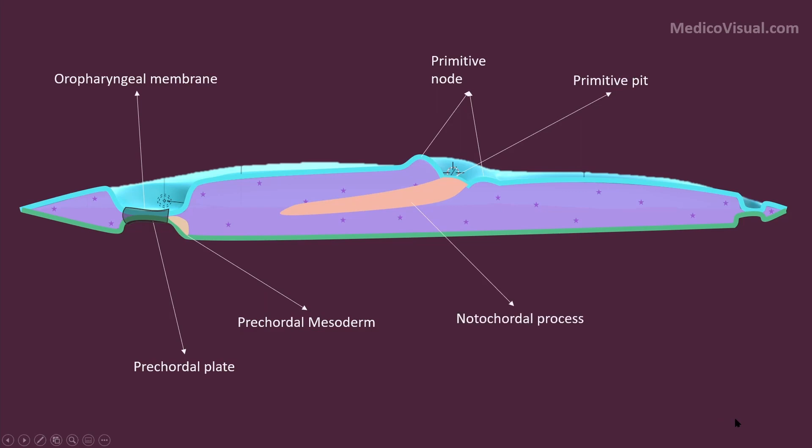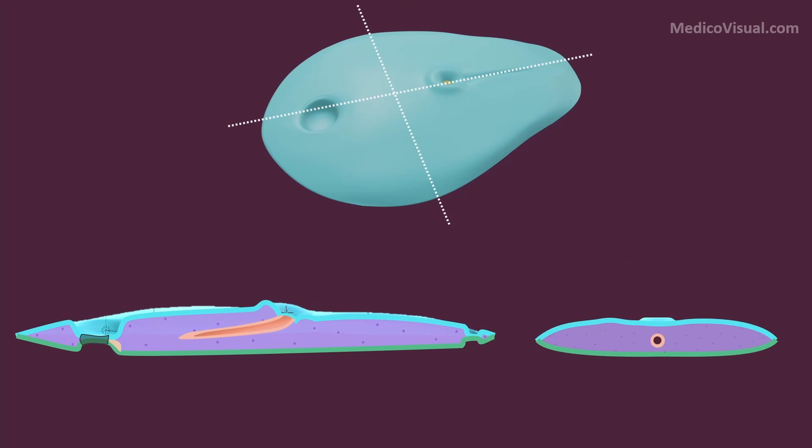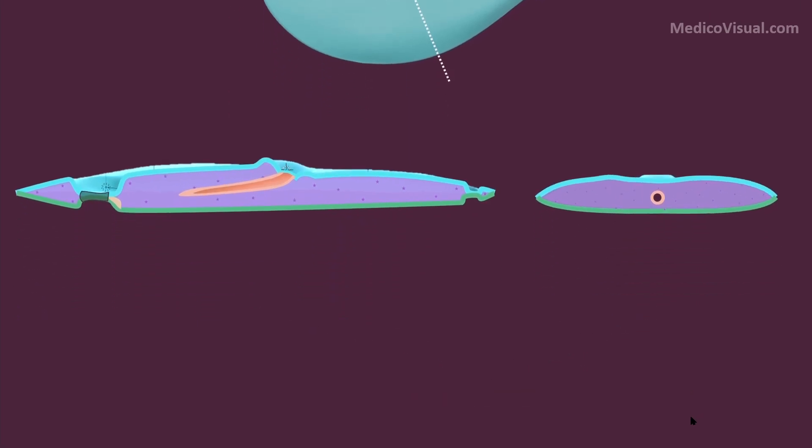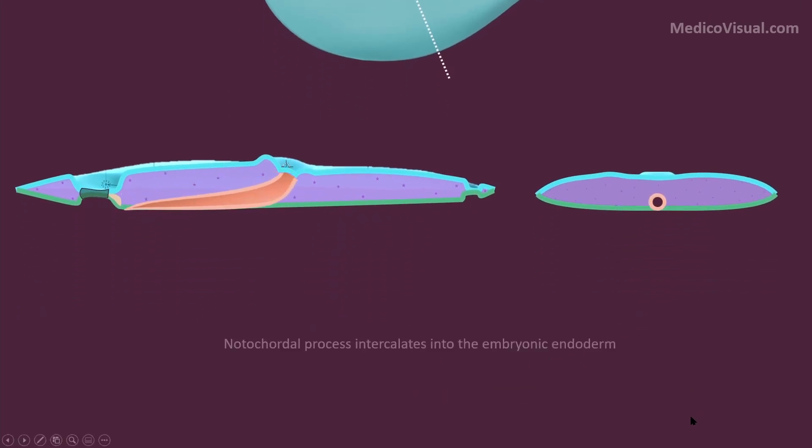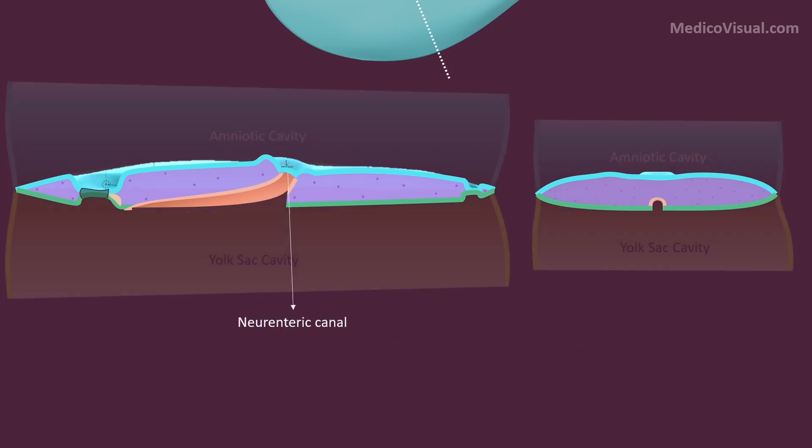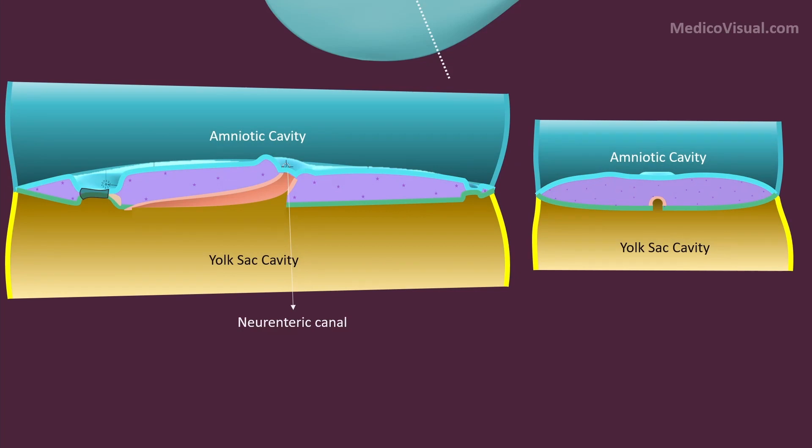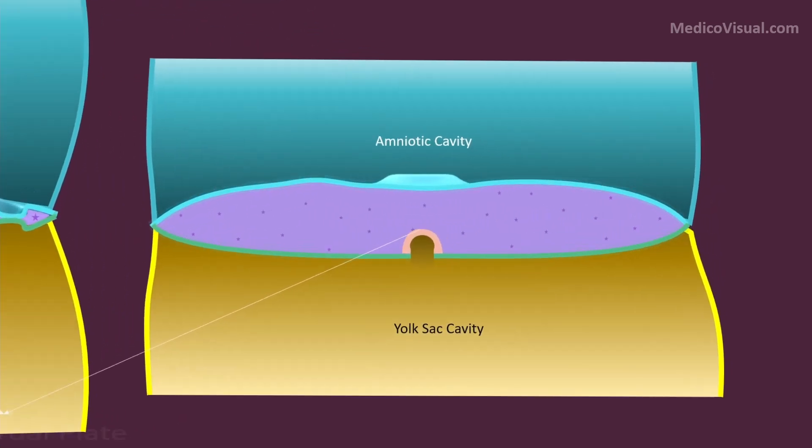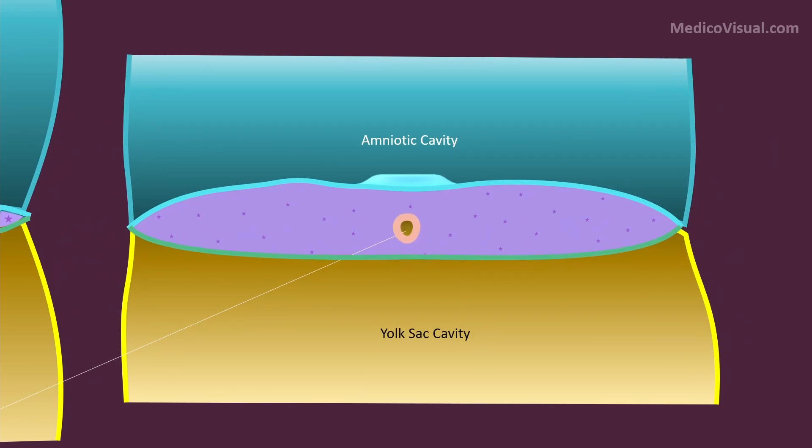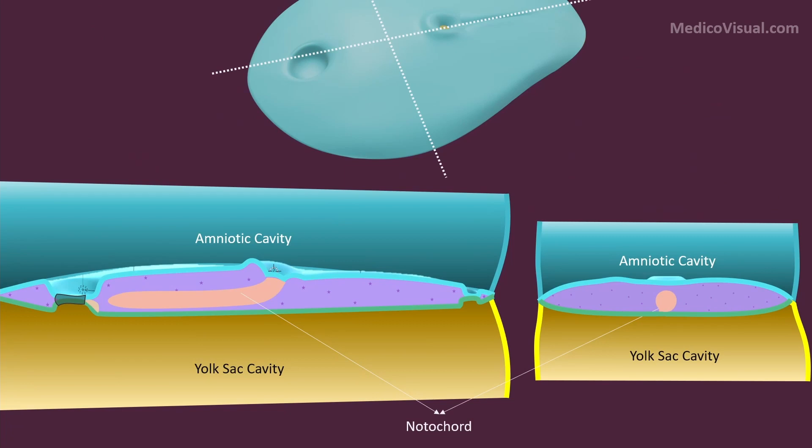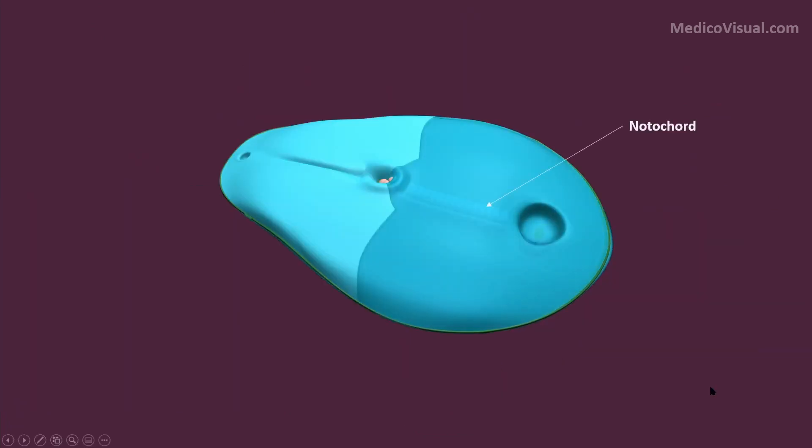Further cells ingressing from the primitive node towards the precordal plate make the notochordal process. The central cells of this process then die out and a canal called notochordal canal is formed. Notochordal canal then intercalates into the underlying endoderm. The floor of this canal is lost and a temporary connection called neurenteric canal between the amniotic and yolk sac cavity is formed. As the floor is lost, the canal is now converted into an arc-like structure called notochordal plate. Later the notochordal plate rolls upward and grows to form a flexible solid rod called notochord.